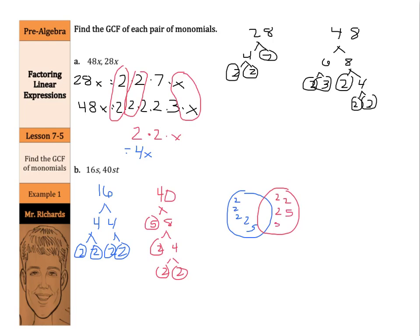Don't forget your s and t. Now let's look for our common factors. Here's a 2, and we can put that in the middle. Here's another 2, and we can put that in the middle. We have a third 2, and that can go in the middle. And our s can go in the middle as well. So what we have in the middle is 2 times 2 times 2 times s. 2 times 2 times 2 is 8, so the greatest common factor of 16s and 40st is 8s.